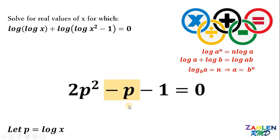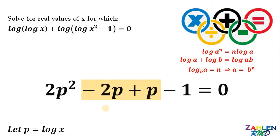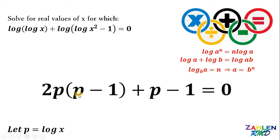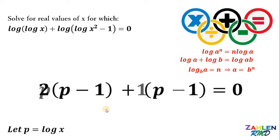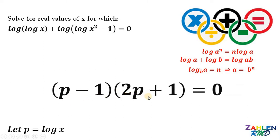Take note of the negative p term: negative p can be written as negative 2p plus p. Factoring the first two terms by taking out 2p gives 2p times (p minus 1) plus p minus 1. Since p minus 1 is a common factor, we factor it out and get (p minus 1) times (2p plus 1) equals 0.